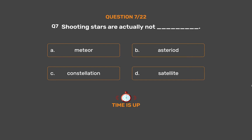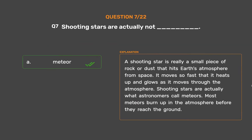The correct answer is Option A: Meteor. A shooting star is really a small piece of rock or dust that hits Earth's atmosphere from space. It moves so fast that it heats up and glows as it moves through the atmosphere. Shooting stars are actually what astronomers call meteors. Most meteors burn up in the atmosphere before they reach the ground.